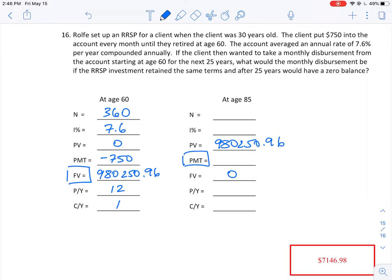The interest rate that this investment has while it's being withdrawn is also 7.6%. We're going to do this 12 times a year in the same terms.